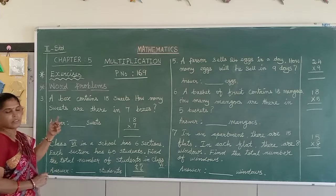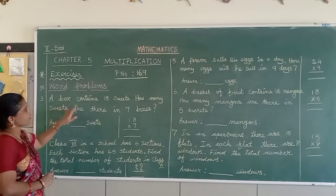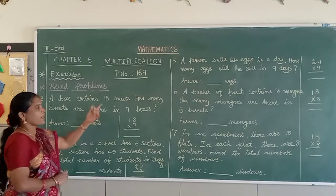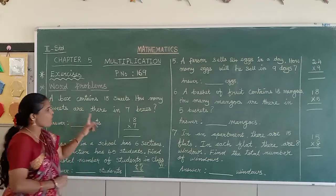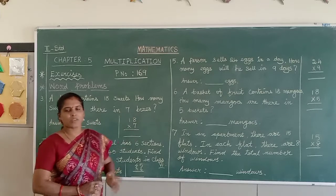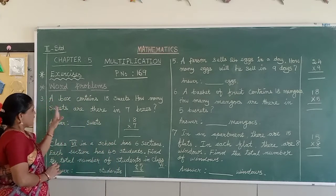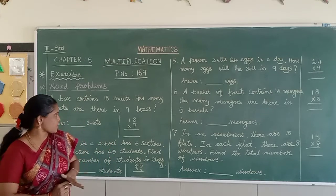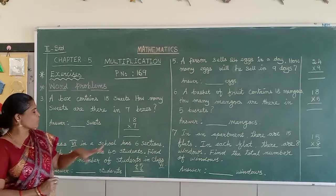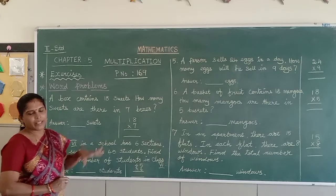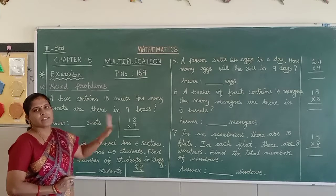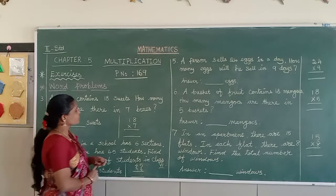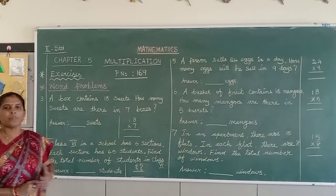Here is the first one. A box contains 18 sweets. How many sweets are there in 7 boxes? So we should do the multiplication and find out how many sweets are there in the 7 boxes — we have to find out the total sweets. Because of that we should do the multiplication.